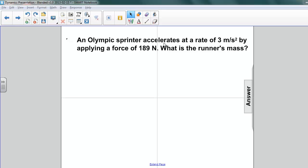Here's the next question. You could have tried number 12. An Olympic sprinter accelerates at a rate of 3 meters per second squared by applying a force of 189 newtons. What's the runner's mass?